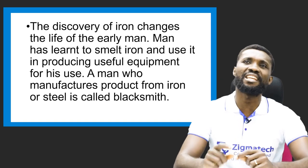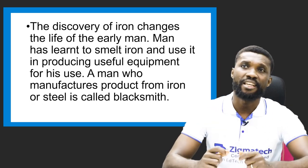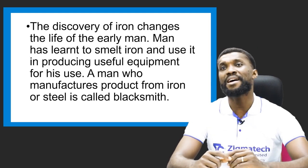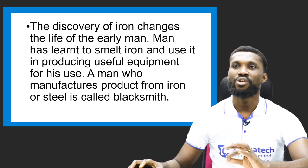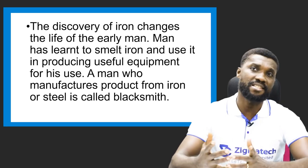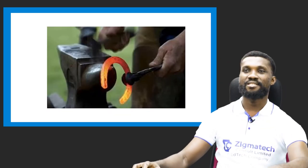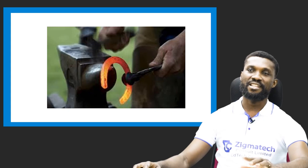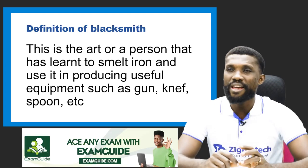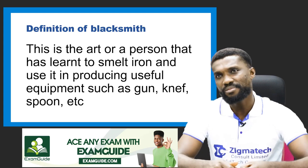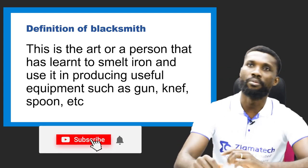The discovery of iron changed the life of early man. Man learned how to smith iron and use it in producing useful equipment. A man who manufactures products from iron or steel is called a blacksmith. Blacksmithing is the act or skill of a person who has learned to smith iron and use it in producing useful equipment such as guns, knives, and spoons, to mention but a few.